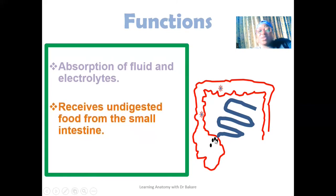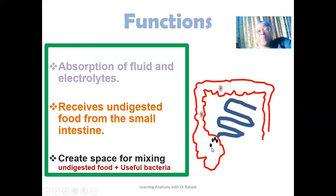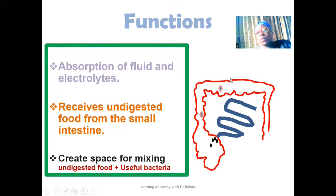The cecum is also the first region of the large intestine, so it is the first space that receives undigested food coming from the small intestine. Digestion occurs in the small intestine, but there are still some particles left undigested that are directed into the large intestine. The first region that receives these undigested food substances is the cecum. It also helps create space for this undigested food to mix with the bacteria present within the wall of the large intestine. Within the large intestine we have bacteria — we do not have digestive enzymes — so the bacteria take the place of digestive enzymes and help break down the undigested food substances released into the cecum.